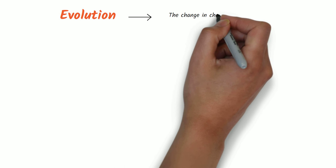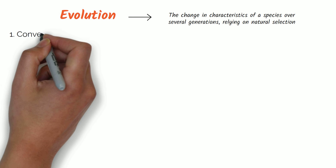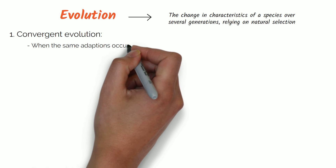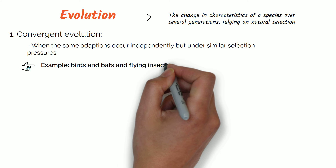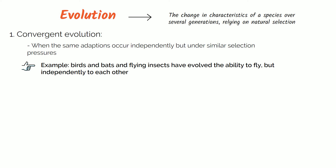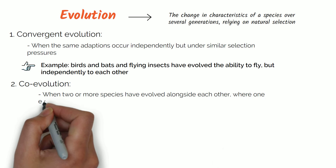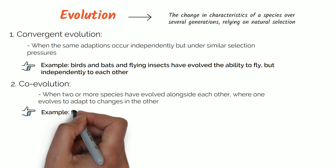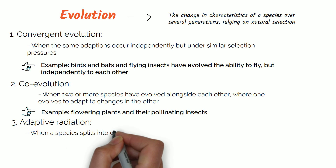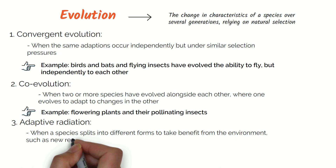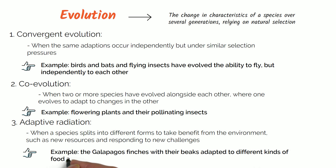Evolution is the change in characteristics of a species over several generations, relying on natural selection. There are three types. First, convergent evolution — when the same adaptations occur independently under similar selection pressures; for example, birds, bats and flying insects have each independently evolved the ability to fly. Second, co-evolution — when two or more species evolve alongside each other, where one evolves to adapt to changes in the other; for example, flowering plants and their pollinating insects. Third, adaptive radiation — when a species splits into different forms to exploit new resources and respond to new challenges; for example, the Galápagos finches, whose beaks adapted to different food types available on different islands.